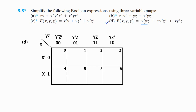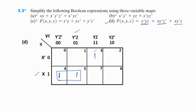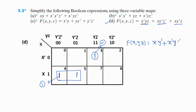Now for the fourth expression, the first term is x'yz, which maps to its specific minterm box — keep 1 there. The second term is xy'z', which maps to its specific box — keep 1 there. We make these two as one group, and this is a single one standing alone. For the simplified expression f(x,y,z): for the first group, x is common and y' is common, z is eliminated — giving xy'. For the second group, this is x'yz. So the simplified expression for the fourth expression is xy' + x'yz. Thank you.